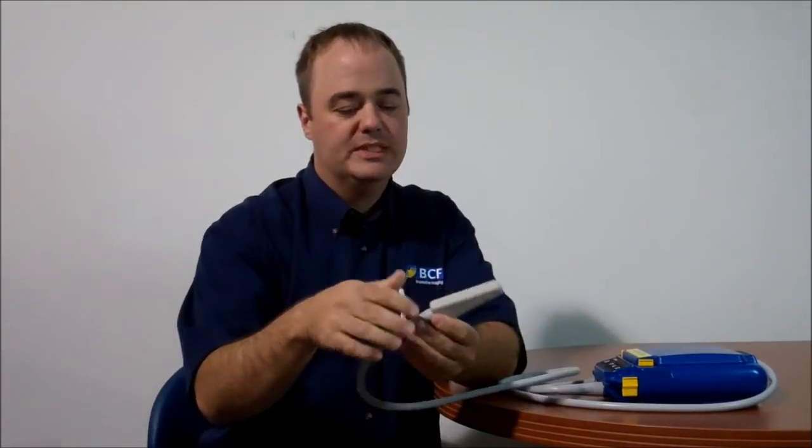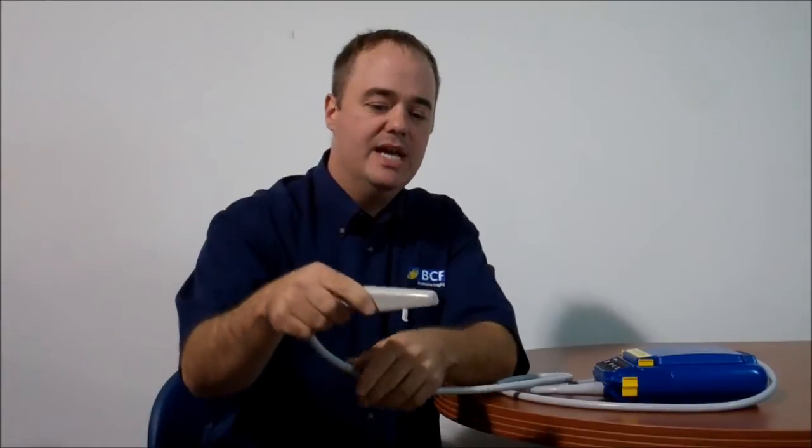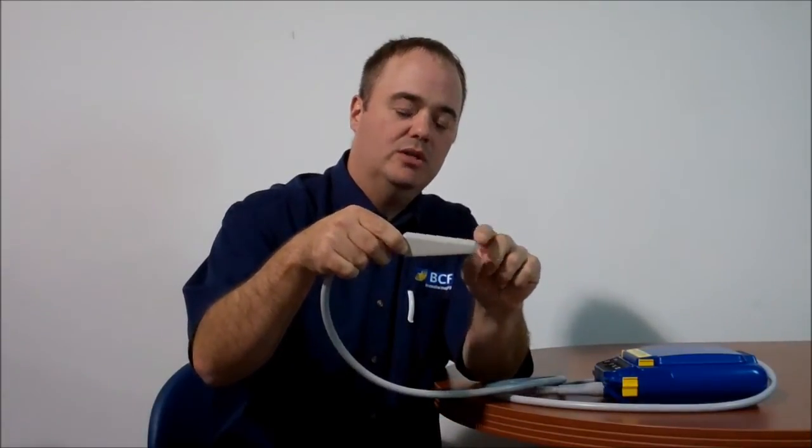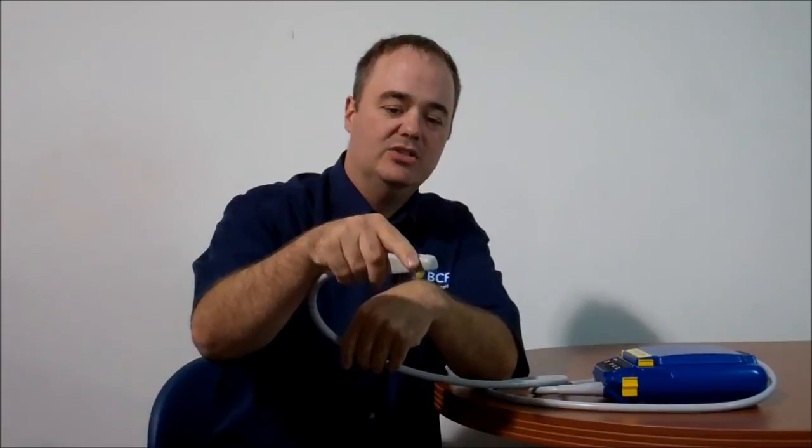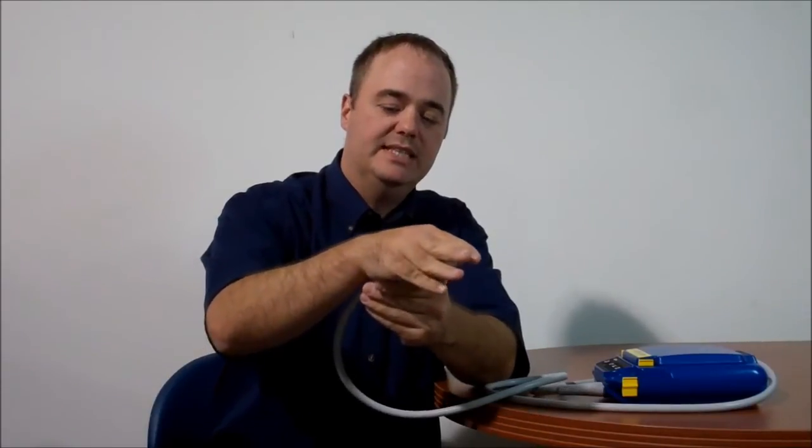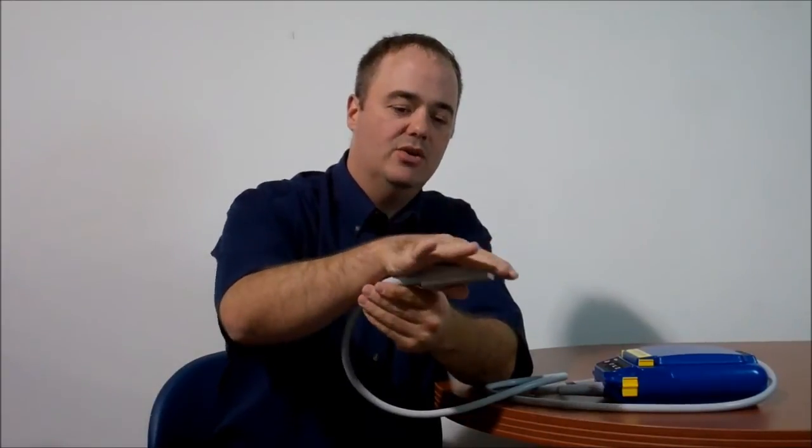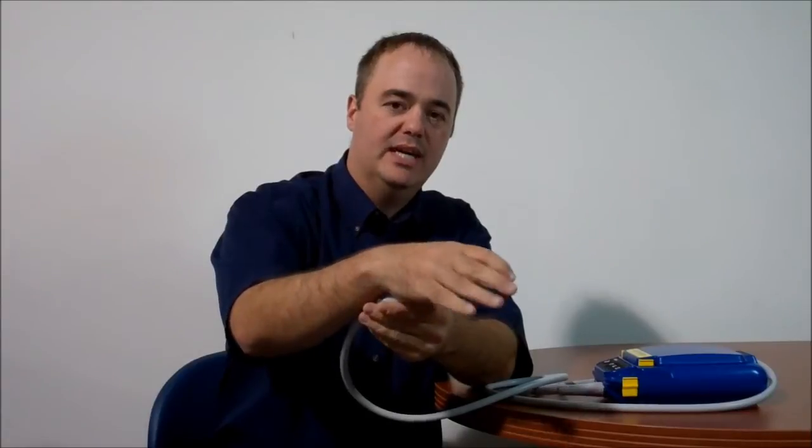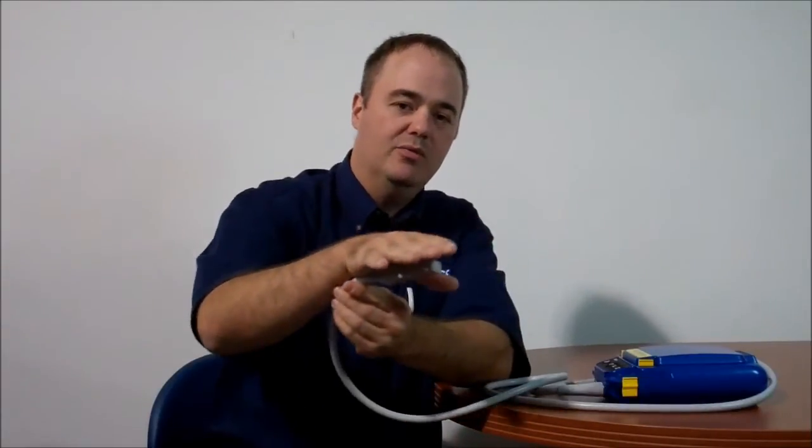Another advantage is the probe itself is very ergonomic. As you can see, the end is smaller so it's easier to initially insert into the cow's rectum. Also it fits into the palm of your hand, so it's easy to manipulate the probe inside the cow and as well guide it with the palm of your hand.